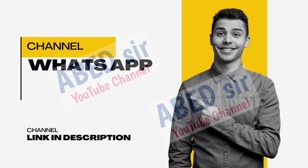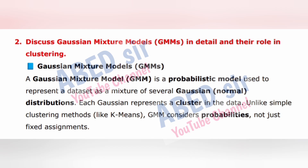Next important long question is 2: Discuss Gaussian Mixture Models (GMMs) in detail and their role in clustering. A Gaussian Mixture Model (GMM) is a probabilistic model used to represent a dataset as a mixture of several Gaussian (normal) distributions. Each Gaussian represents a cluster in the data. Unlike simple clustering methods like k-means, GMM considers probabilities, not just fixed assignments.